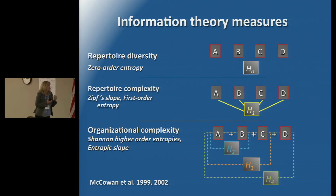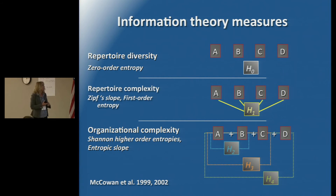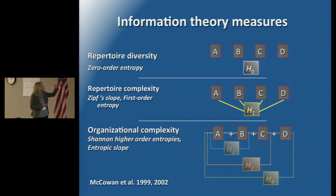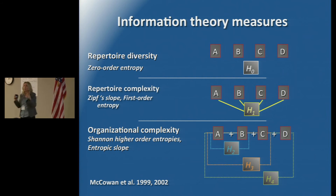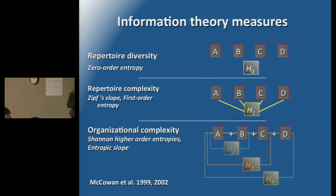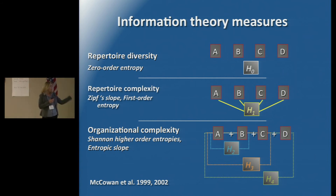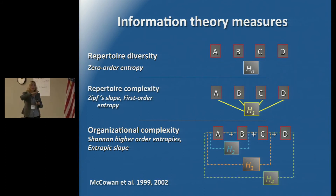First-order entropy measures repertoire complexity — that is, the differences in the degree to which different signals are used in a repertoire — and Zipf slope is included in that, which Ramon will talk about more shortly. Organizational complexity tries to look at higher-order relationships between the whistles: how important are two-signal sequences and dependencies, or three-signal sequences. The way we do that is to develop a measure called entropic slope, which tells us the degree to which there is more structure in a communication system.